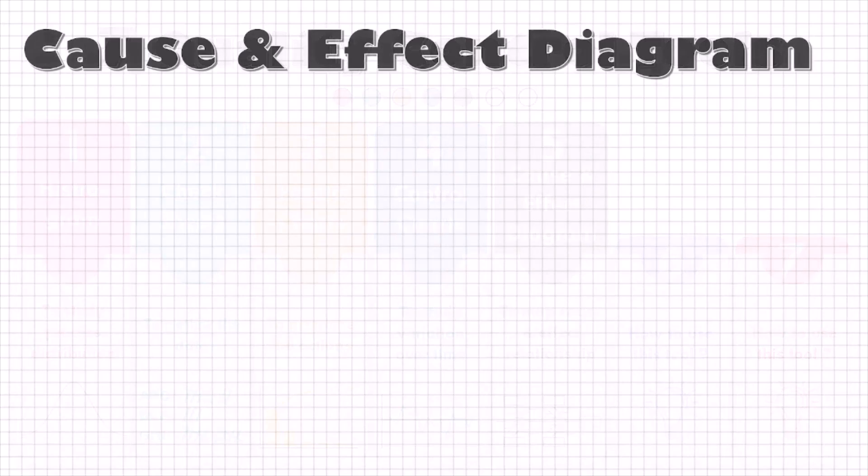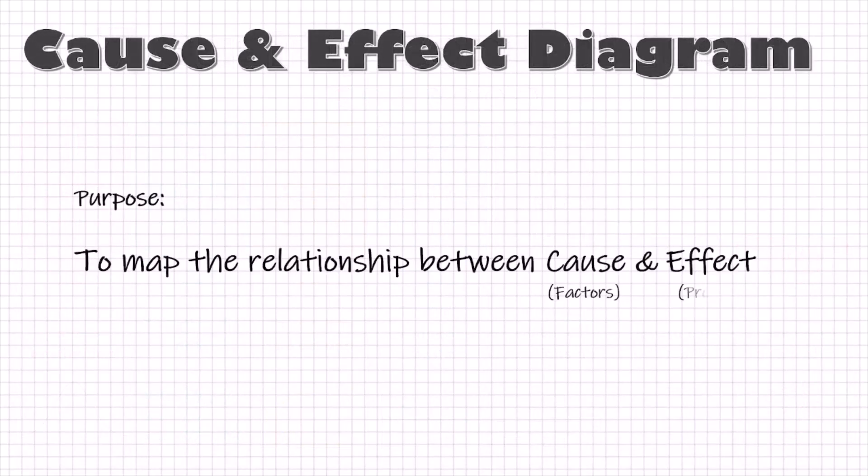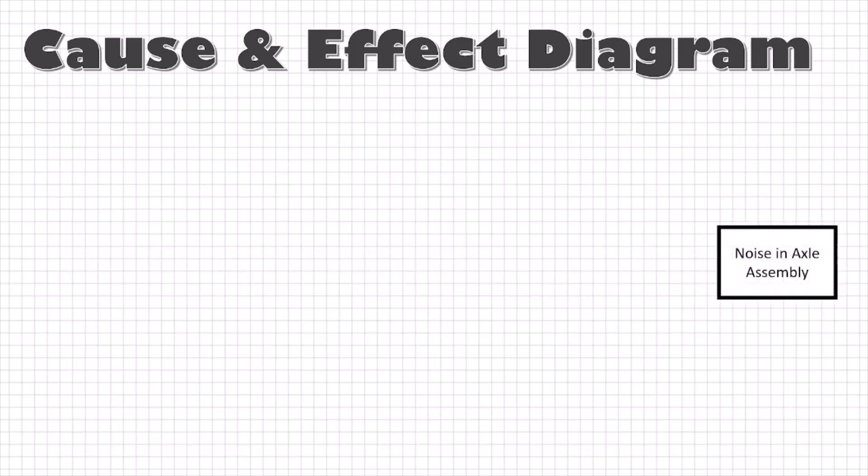Cause and effect diagram is used to analyze a problem by mapping the different factors or potential causes that can result in our problem, i.e. effect. We can make a cause and effect diagram by following these steps. First, we will write down in a box the quality characteristic that we want to improve in the middle right of a paper and then draw a thick arrow from the left side up to this box.